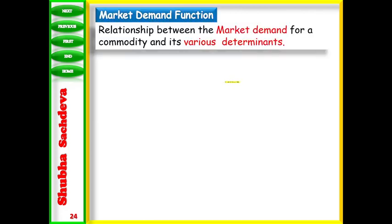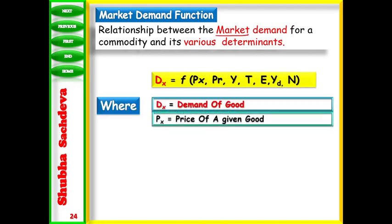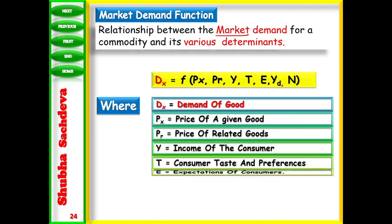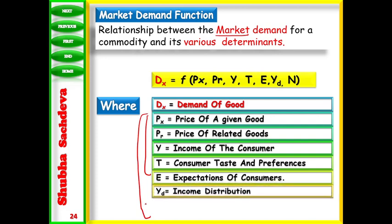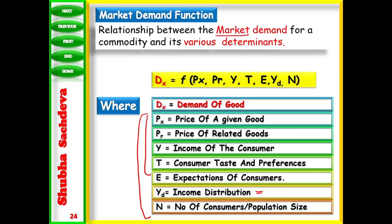When we talk about market demand function, it is the same. All the determinants from individual demand, but only two determinants are added. These individual determinants plus these two will become market demand. Next is income distribution YD - whether distribution of income is equal or not. And N means number of consumers or population size. One more is S - season and climate. This can also be a determinant of market demand function.